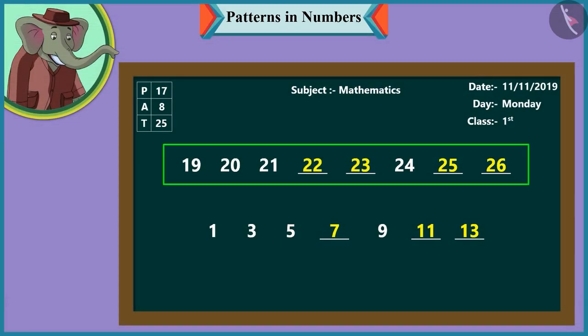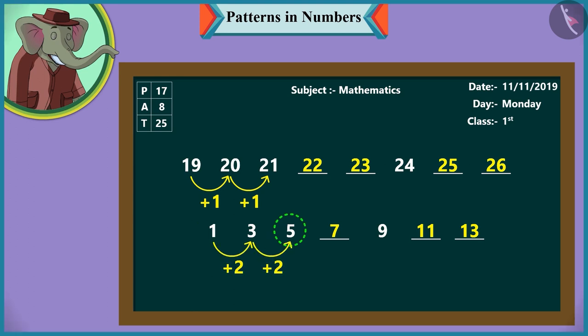Children, here in the first number pattern, one has been added to each number to take it forward. Like adding one to nineteen makes twenty, and adding one to twenty makes twenty-one.